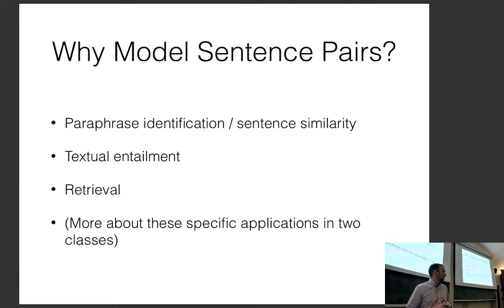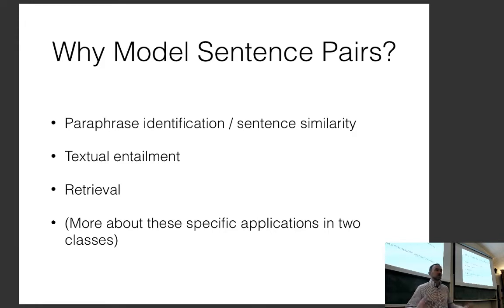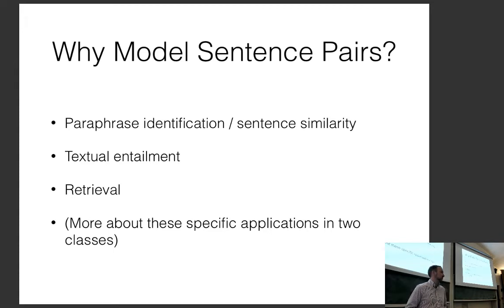An example of textual entailment: 'Graham taught a lecture on recurrent neural networks today' entails 'Graham taught a lecture today.' The second is true if the first is true. There's also contradiction — 'Graham did not teach a lecture today' means 'Graham taught a lecture on recurrent neural networks today' is false.